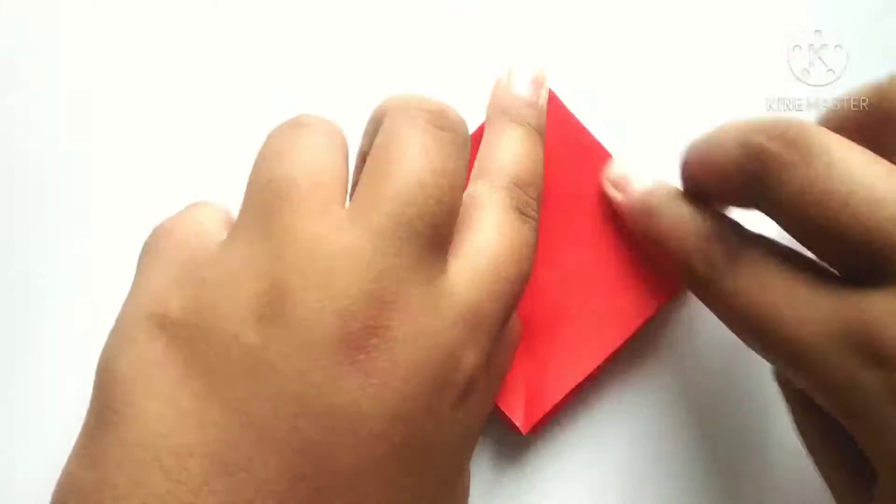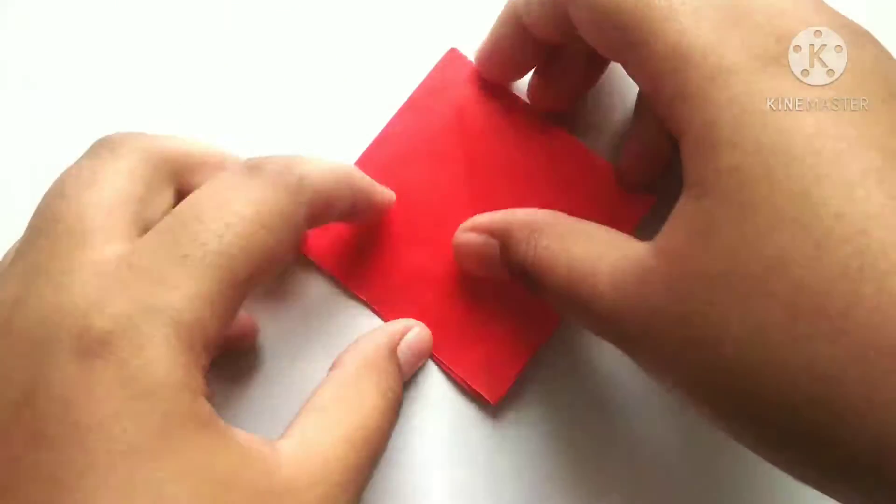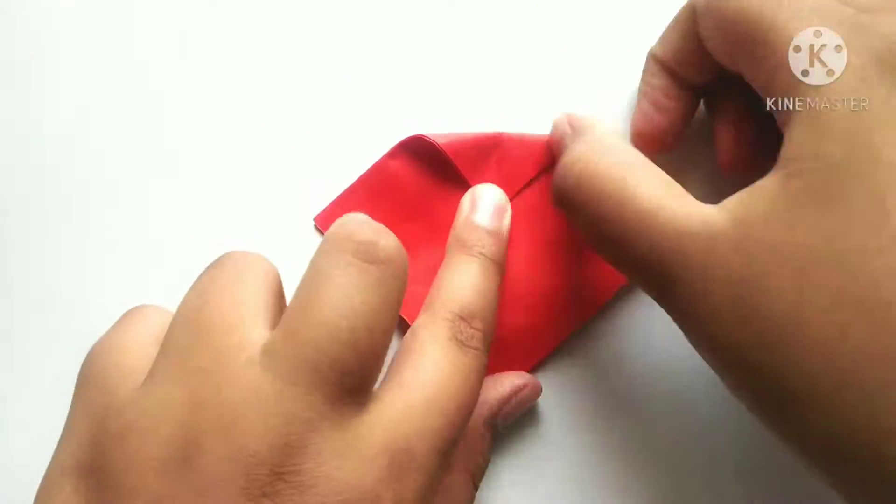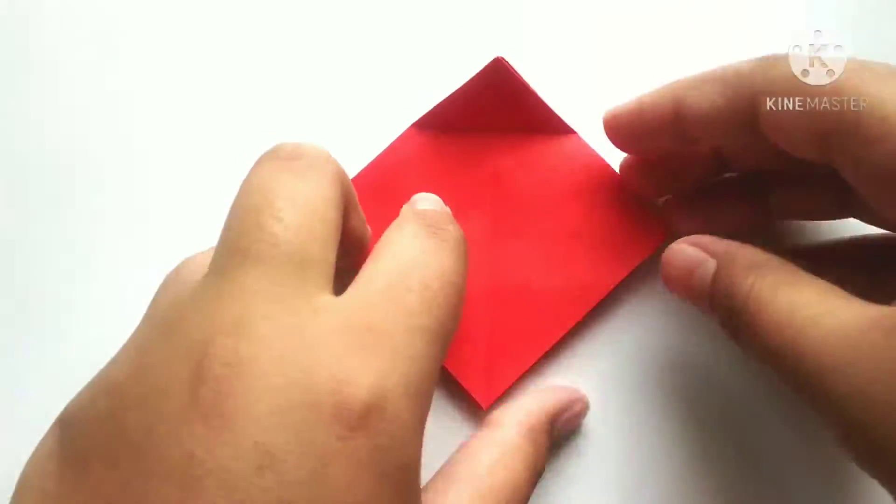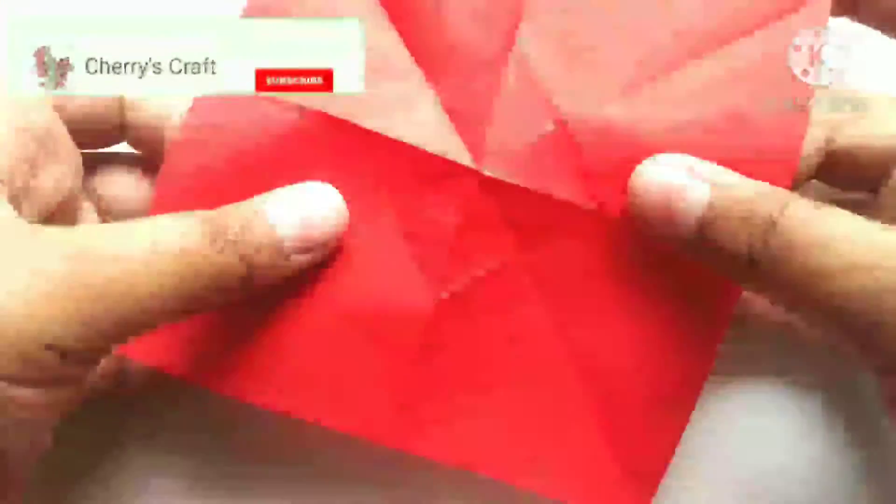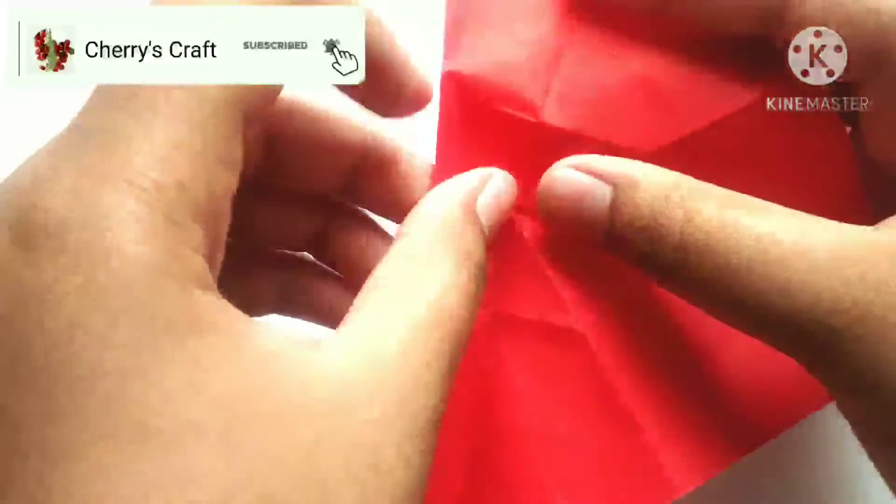After folding another diagonal, we need to fold like this and fold the upper point to the downside. After we need to open and fold all the sides upwards like this.